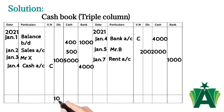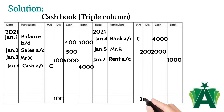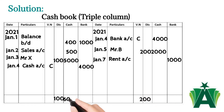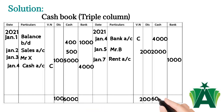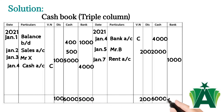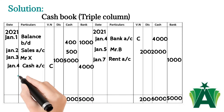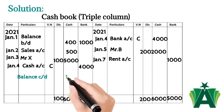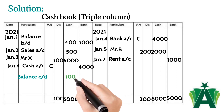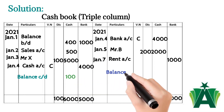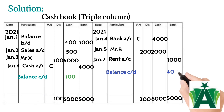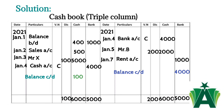Balancing: total discount allowed is $100 and discount received is $200. Total debit side of the cash column is $5,900 and total credit side of the cash column is $6,000. Since the credit side is greater than the debit side, the $100 is a credit balance of cash. Total debit of the bank column is $5,000 and total credit side of the bank column is $1,000, hence $4,000 is the debit balance of bank.